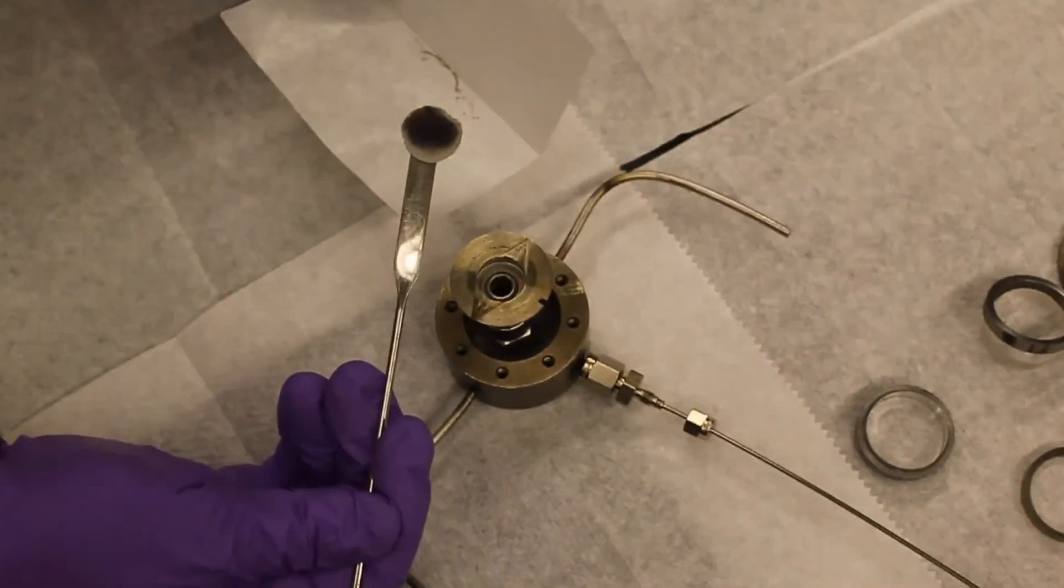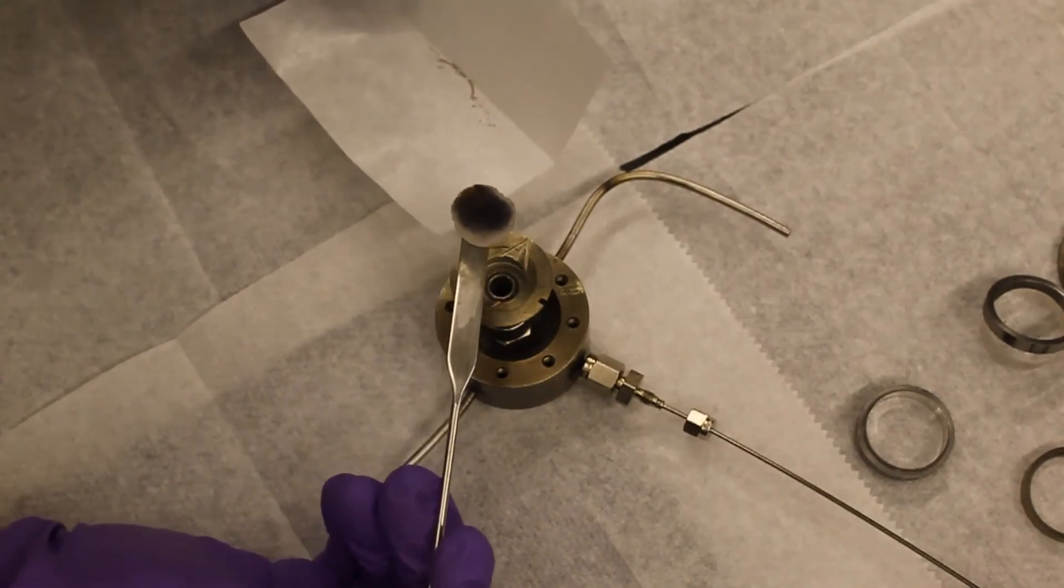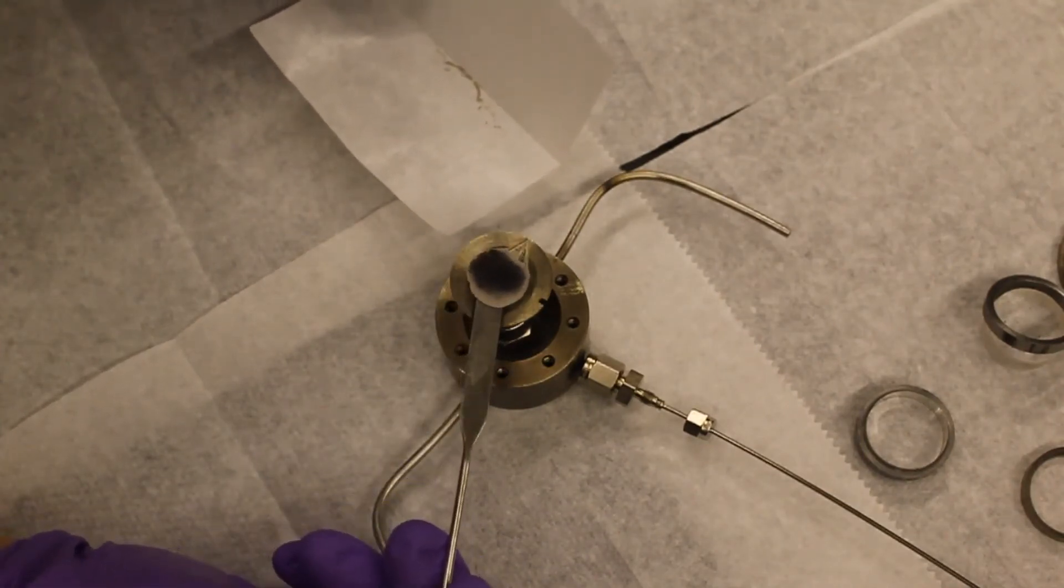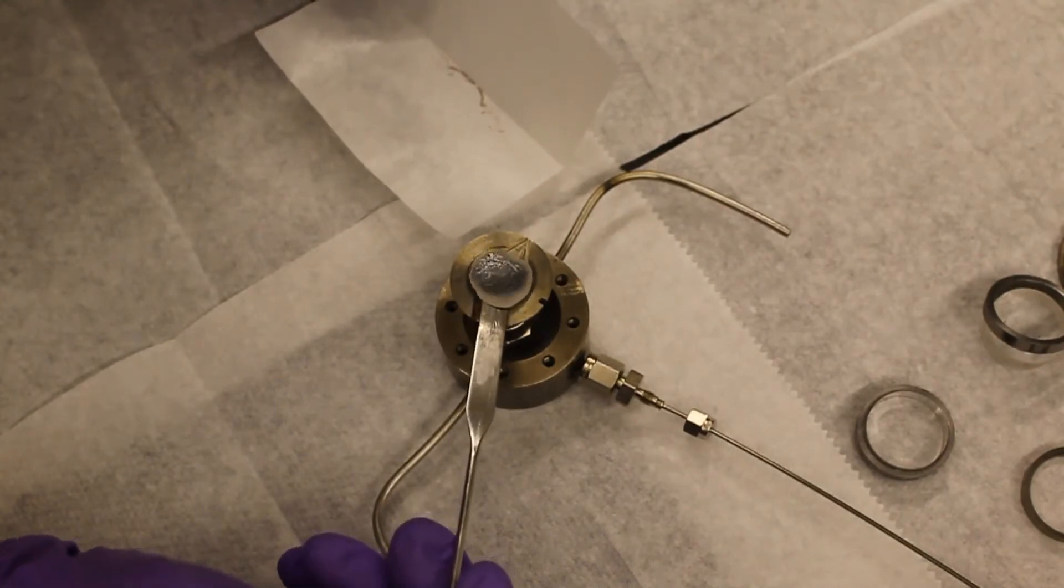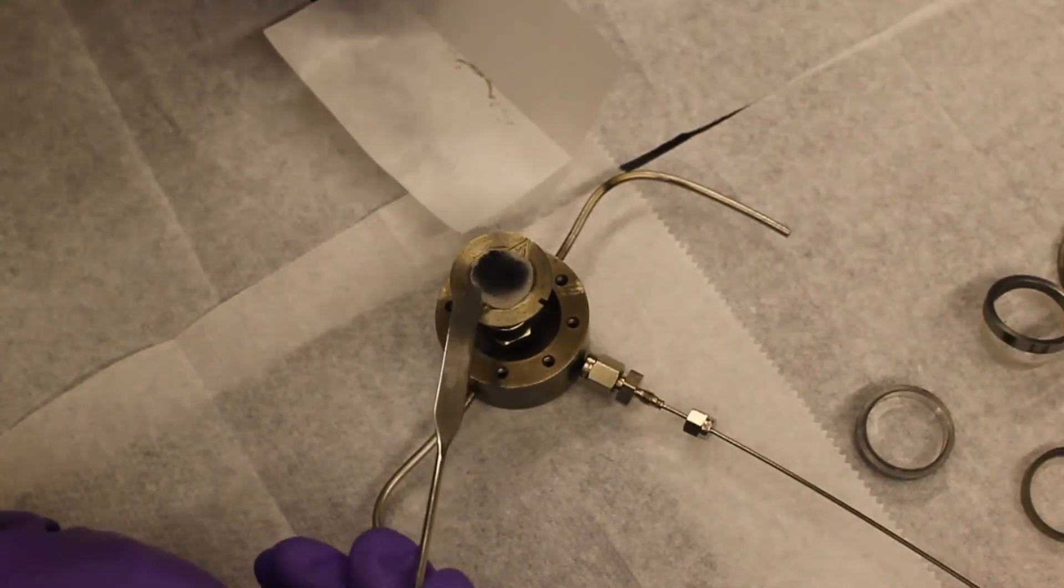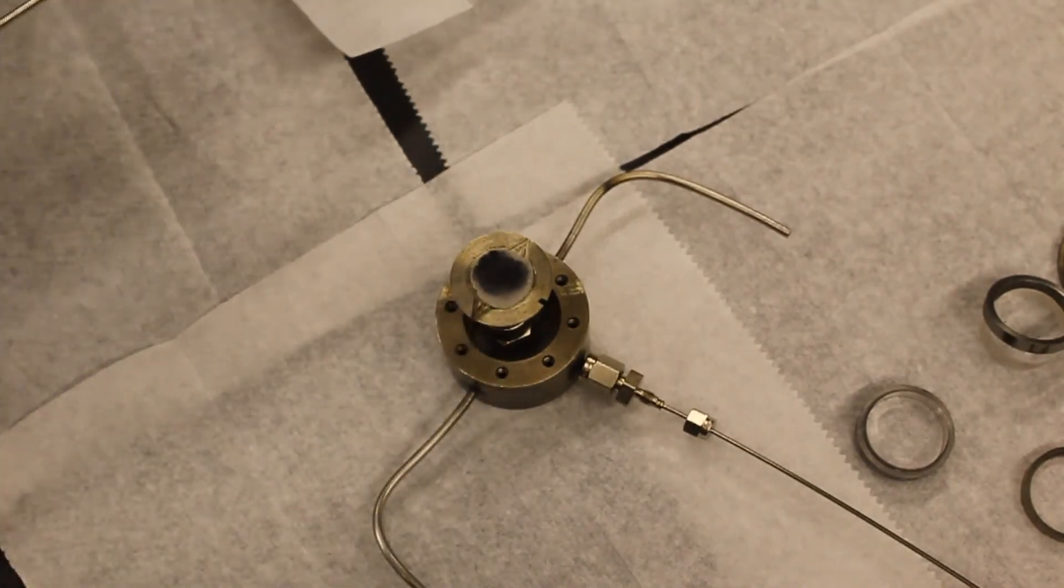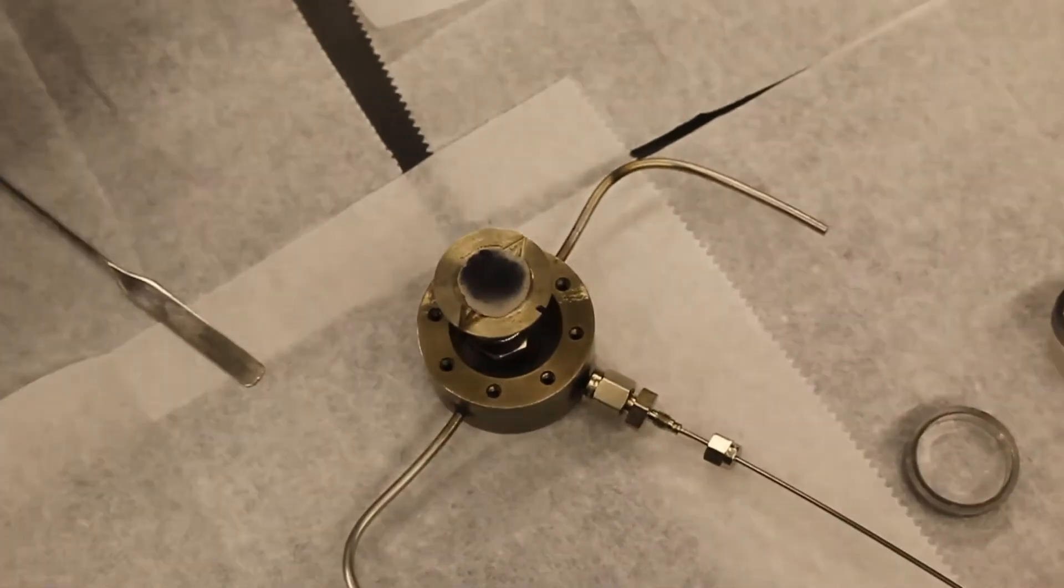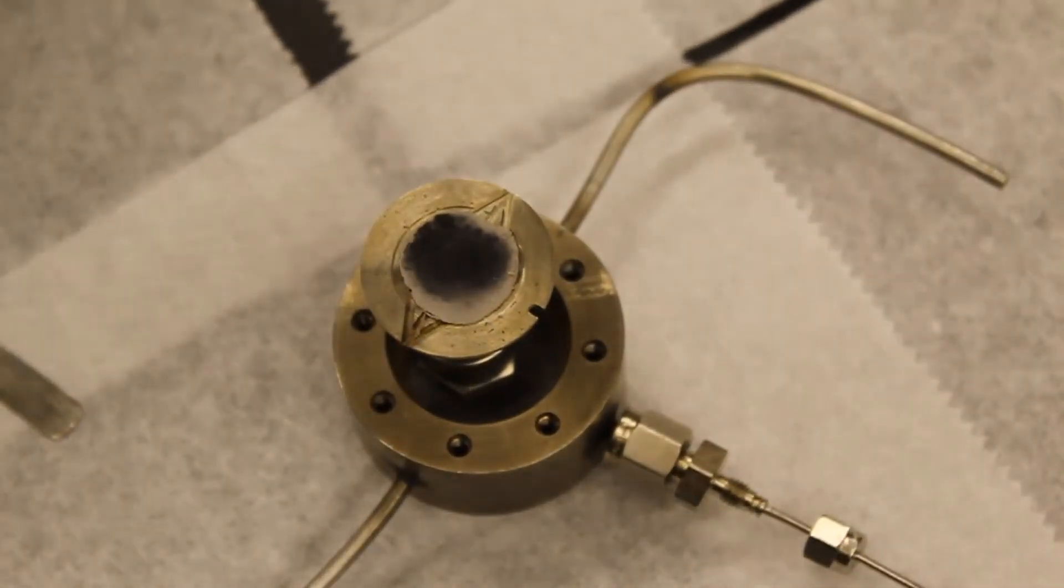Place the sample pellet into the recessed area of sample holder A. The recess should be able to hold the entire pellet. After putting the sample in sample holder A, we measure the weight of weighing paper to obtain the weight of the sample pellet.